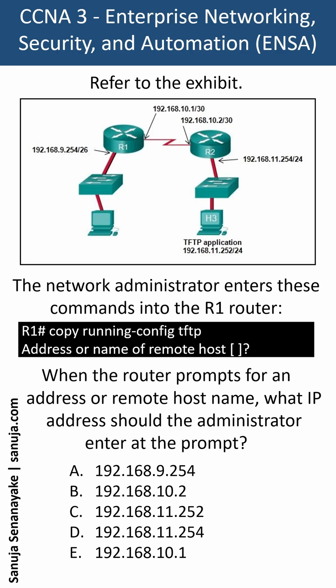The answer to this question is C: 192.168.11.252. The reason for that is copy running-config tftp is asking for the IP address of the TFTP server. The requested address is the address of the TFTP server, and therefore that's the address we need to enter.